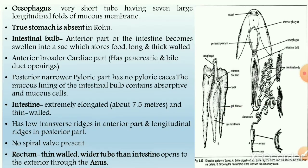The pharynx region leads into the esophagus region. The esophagus is a very short tube and has seven large longitudinal folds of mucous membrane.